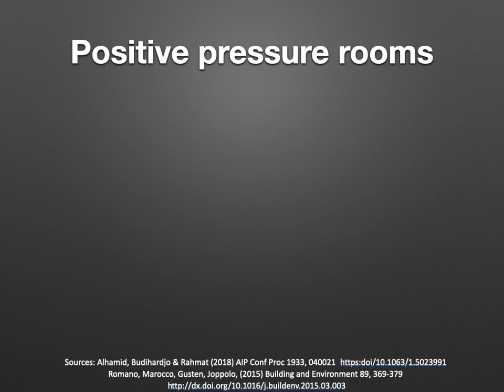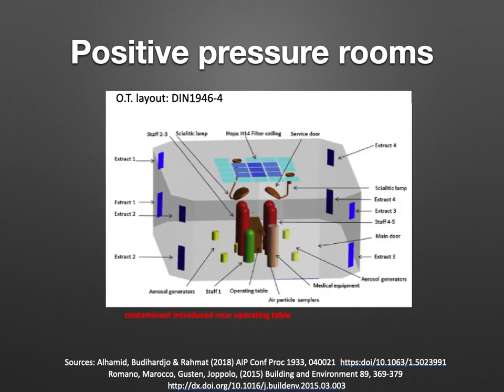So let us discuss about positive pressure rooms and their setup. In the slide you can see the central operation table, which is brown in color. The red color denotes the position of the staff — surgeons and anesthetists. You can also see a few more objects inside the theatres, including the laminar flow on top through which air comes in, and ducts all around which vent the air outside the operation theatre.